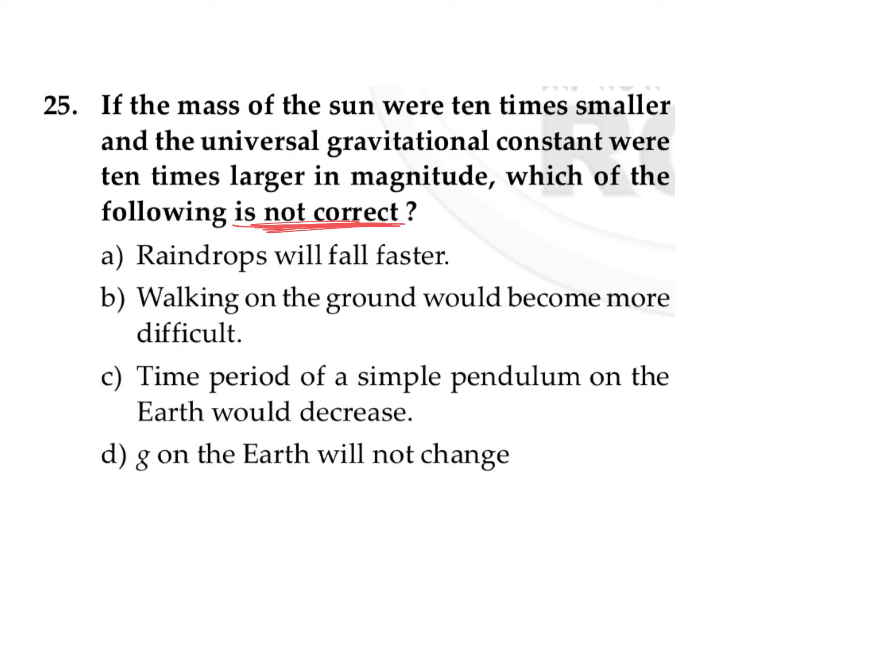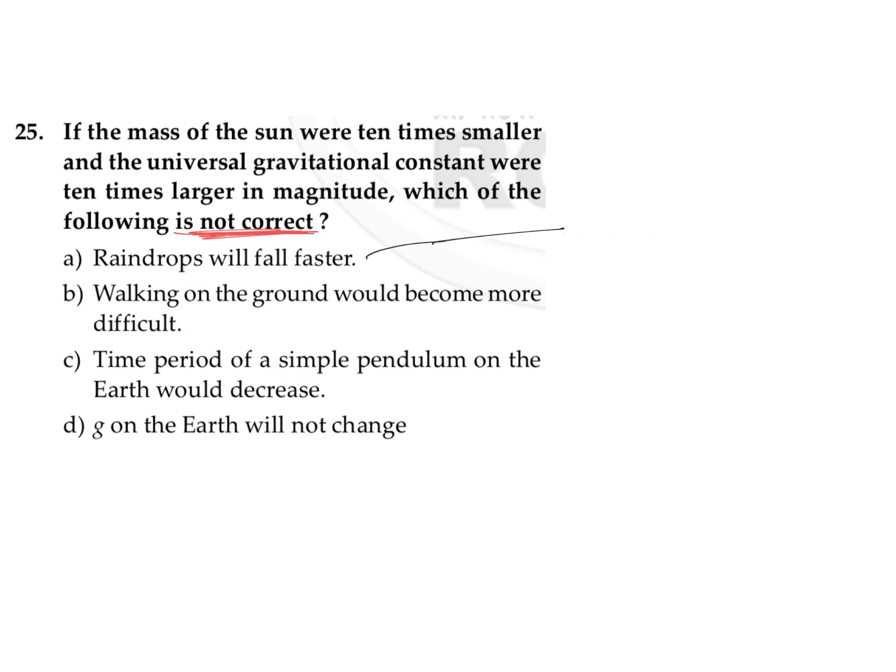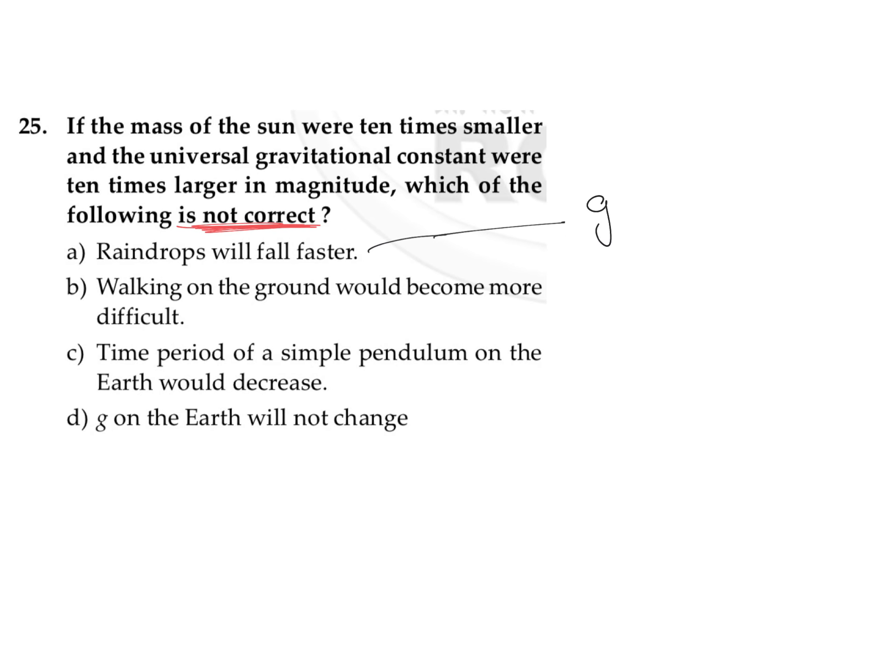So first option: raindrops will fall faster. We know that raindrops are falling under the effect of gravity. The equation for acceleration due to gravity is GM/r², and here this G is increased by 10 times.